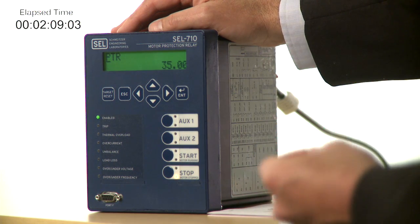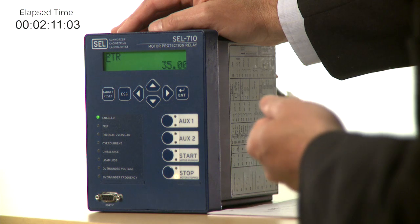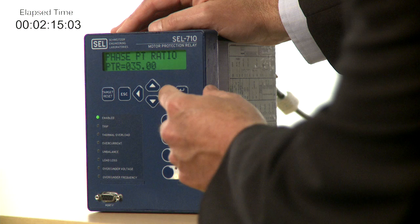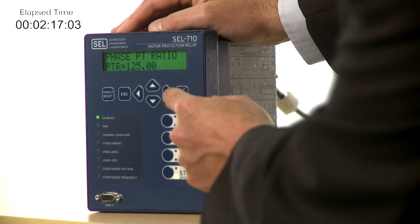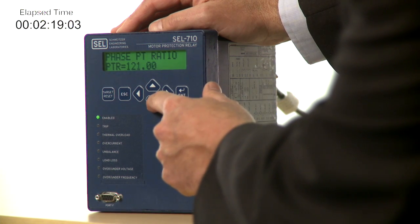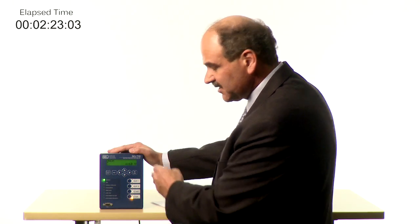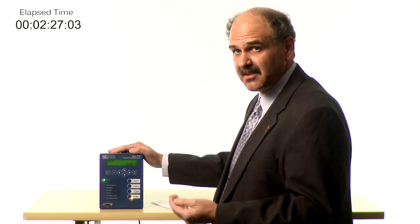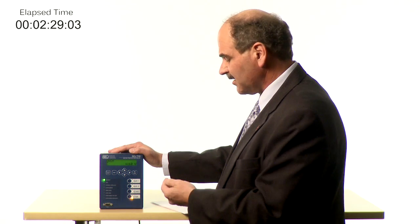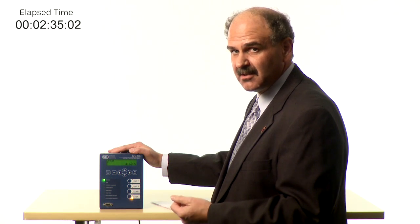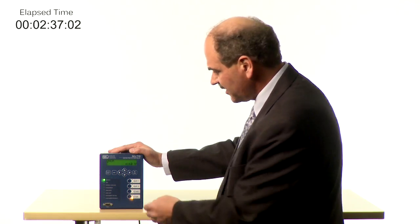For the PT ratio, the PT ratio for this particular application was 120. And the nominal voltage is set for 4160. Now if you looked at the motor nameplate, it was rated for 13,200 volts, but the motor control center supplies a rated voltage of 13,800 volts. So we're going to set the relay to the rated bus voltage of 13,800 volts.